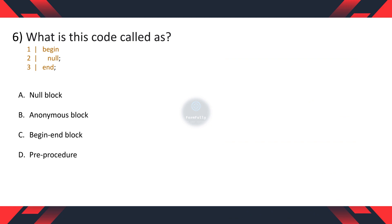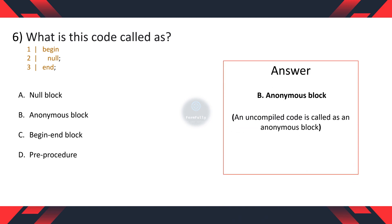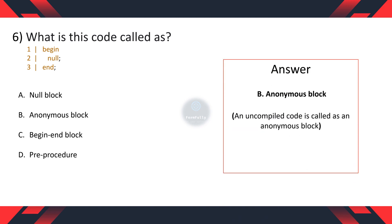Question 6. What is this code called? A. Null block. B. Anonymous block. C. Begin end block. D. Pre procedure. And the correct option is B — Anonymous block — because an uncompiled code is called an anonymous block.